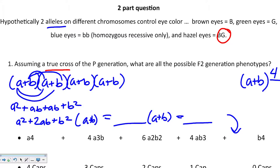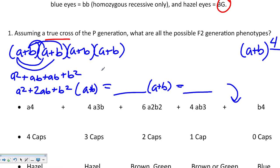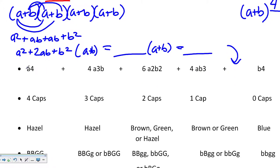What this means when you go through is that this has four capital letters. This has three caps, two, one, and zero.